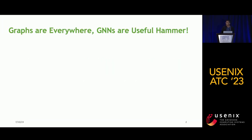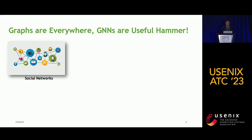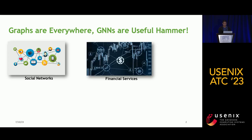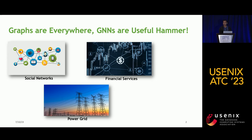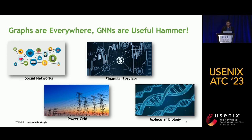Nowadays, graphs are everywhere in our daily life. To analyze the graph effectively, graph neural networks have emerged as a useful tool. For example, we can find applications in social networks for friend recommendation, financial services for fraud detection, power grids for failure detection, and molecular biology for property prediction.